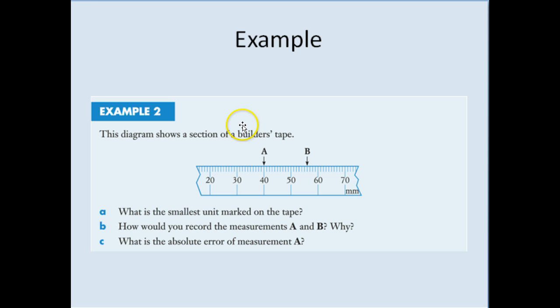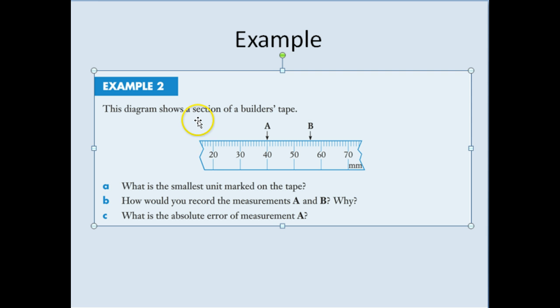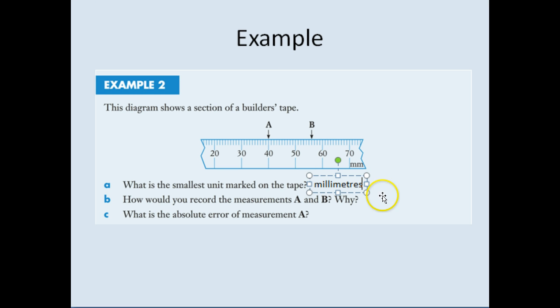Okay, first example here. So this diagram is a section of someone's measuring tape and we can see here that the smallest unit is in millimeters. What is the smallest unit marked? So we've got centimeters marked here but in between that we have our millimeters. So our smallest unit marked would be millimeters.